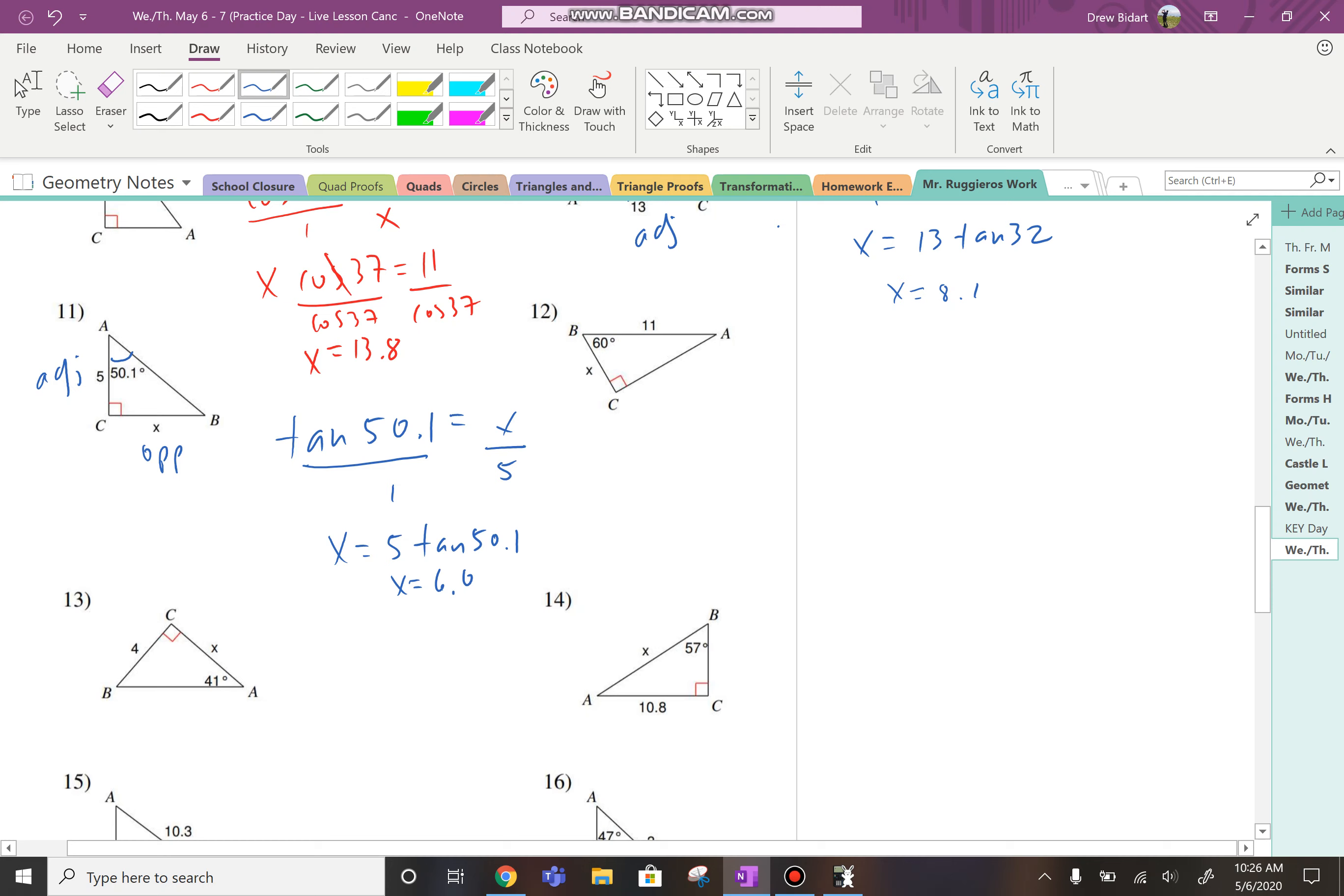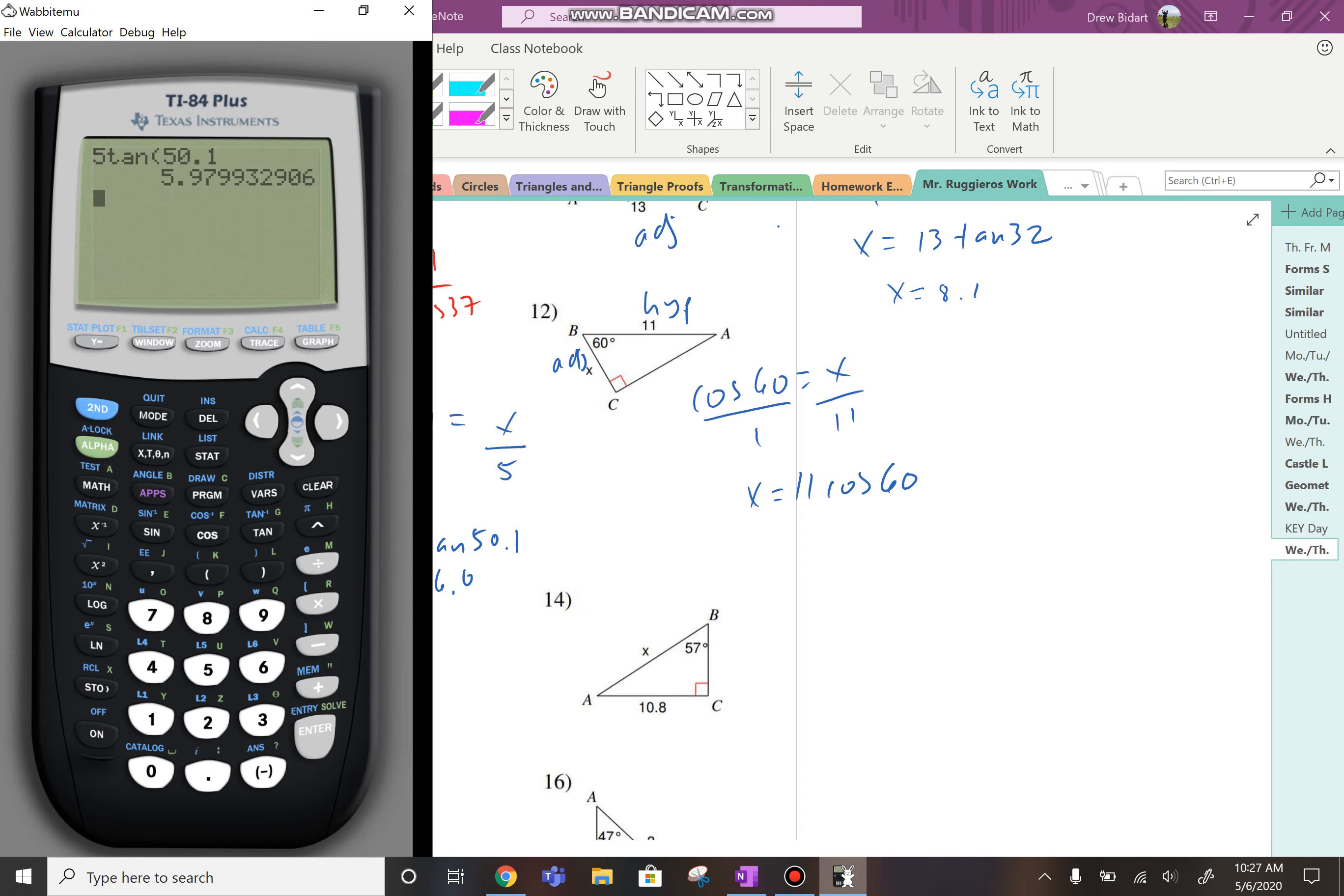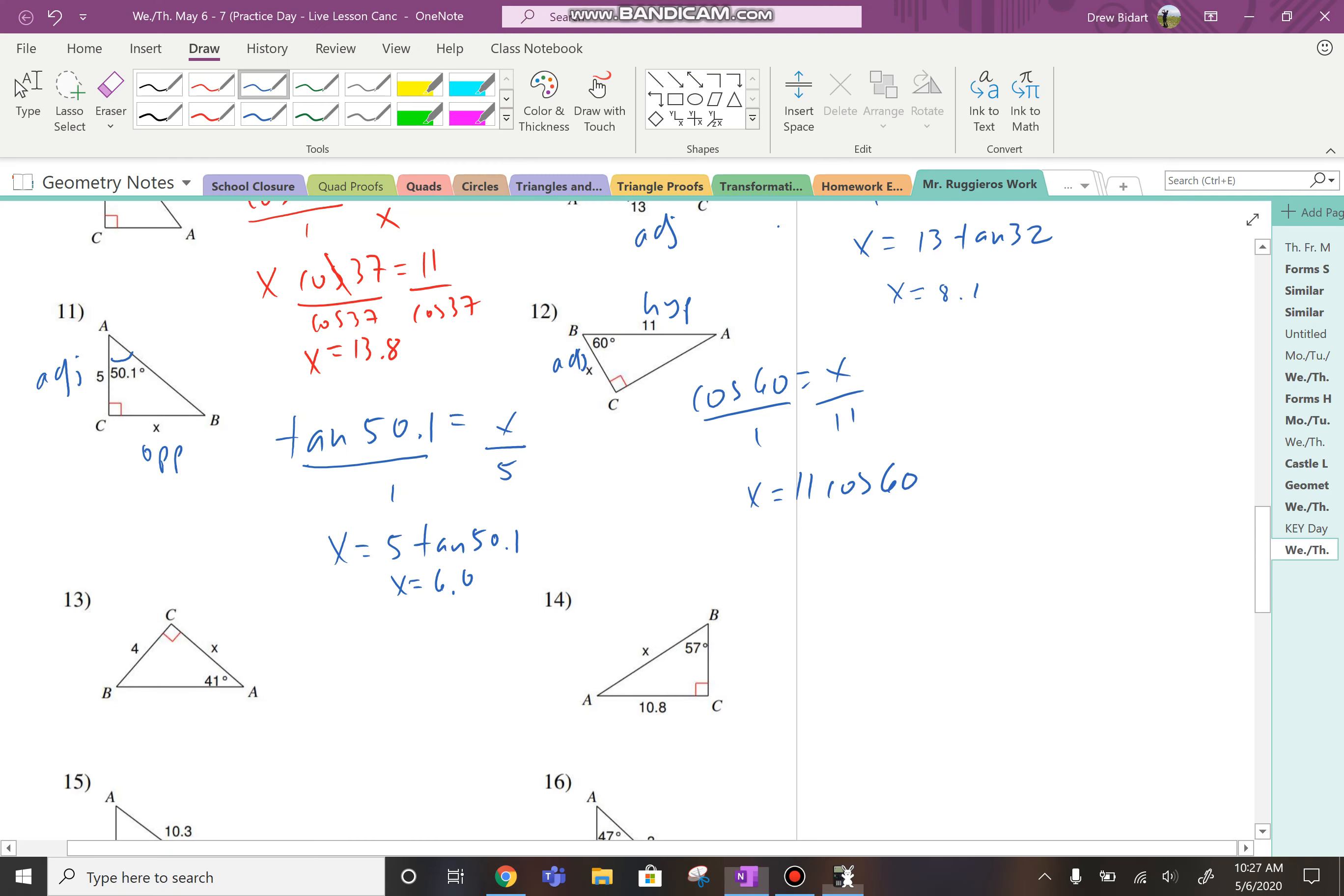Okay, and then in question number 12, the 11 is the hypotenuse and X should be adjacent to the 60. So that should be a cosine. The cosine of the angle equals the adjacent over the hypotenuse. X, cross multiply, X is 11 cos 60. So I go 11 cos 60, and that should be 5.5.